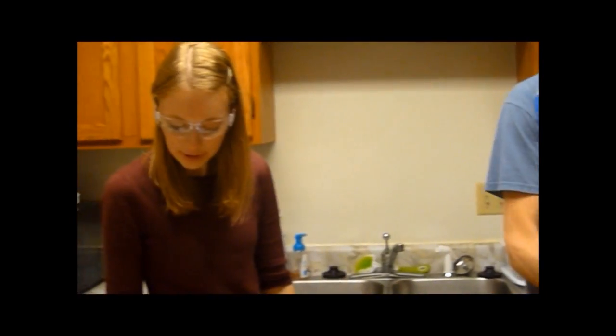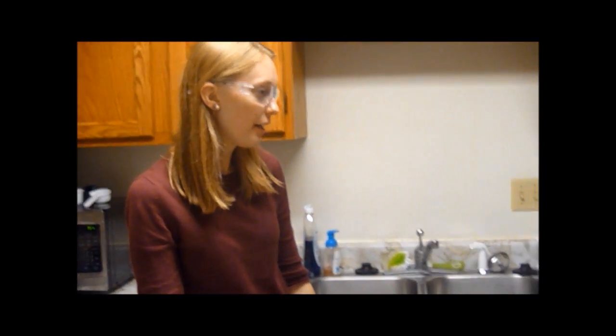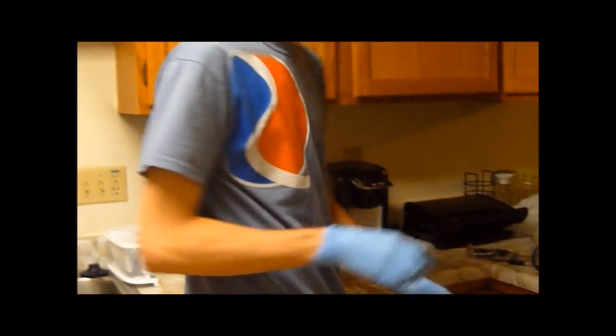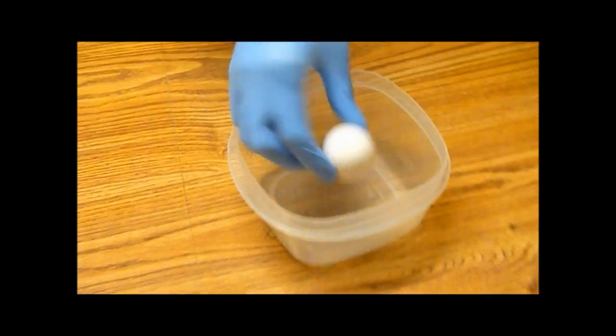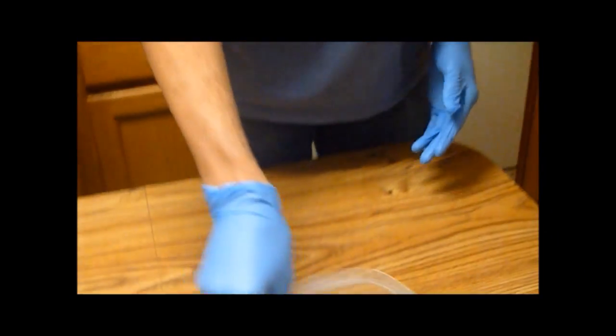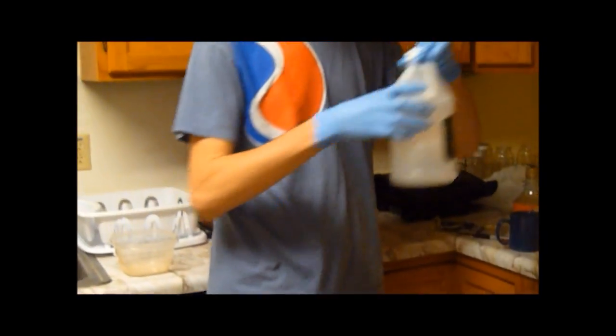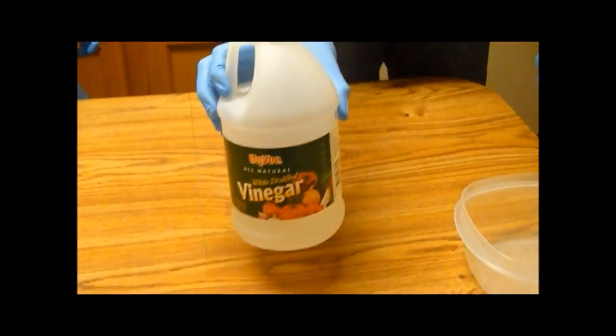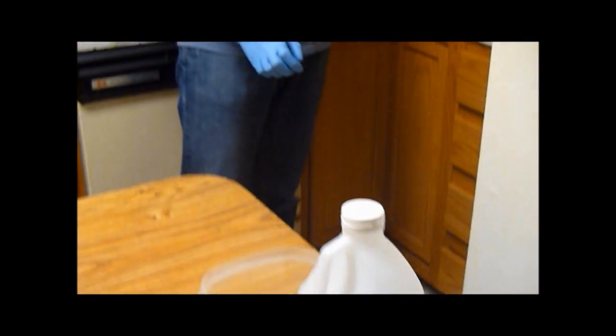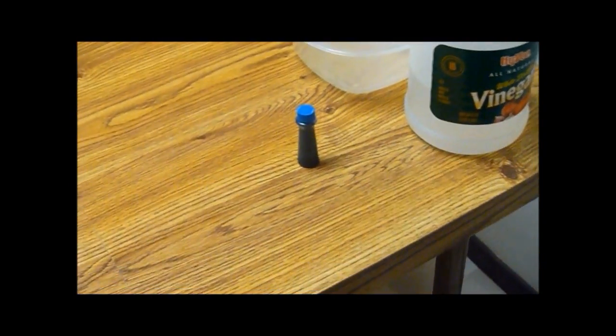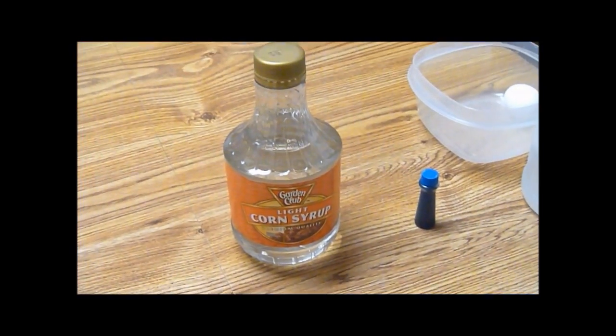So then we'll need one raw egg and one container, and the container has to be big enough to hold the egg. Then we'll need vinegar, once again we'll need enough to cover the egg. We'll need food coloring, corn syrup, we'll need water, and a spoon.